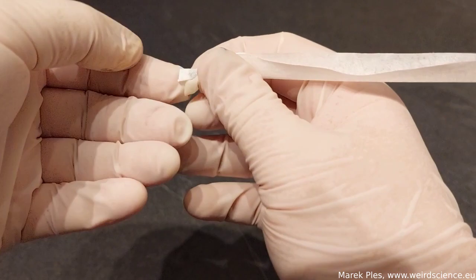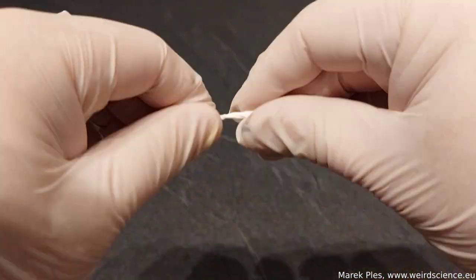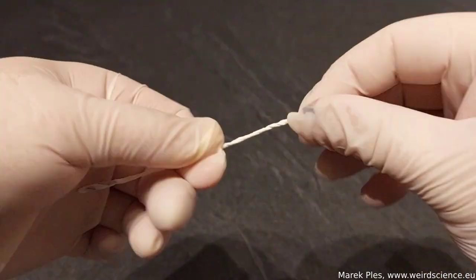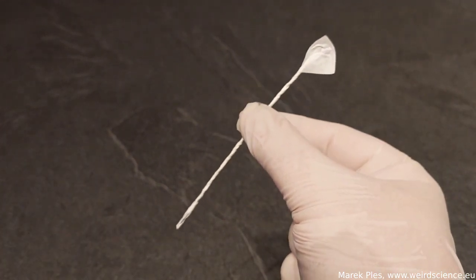The paper should then be tightly rolled to prevent the powder from spilling, which can be a bit tricky. Maybe not perfect, but our own handmade senko hanabi is done.